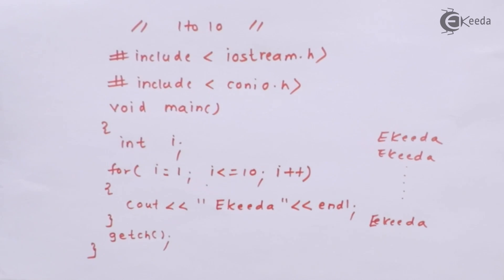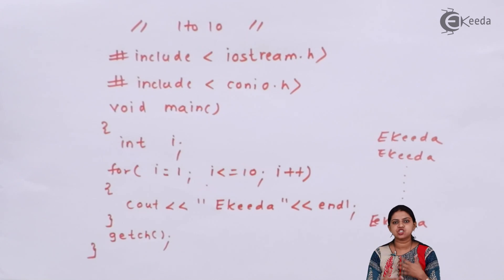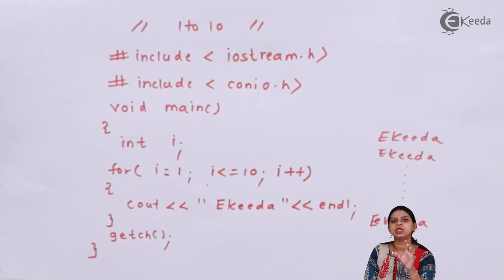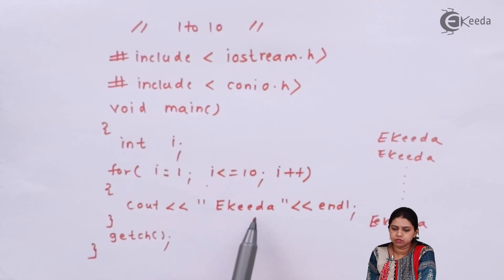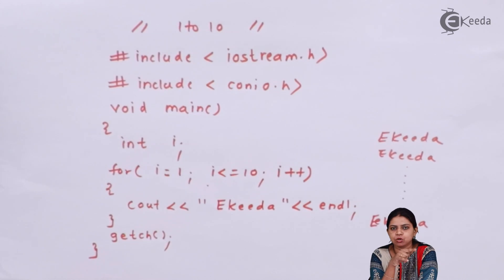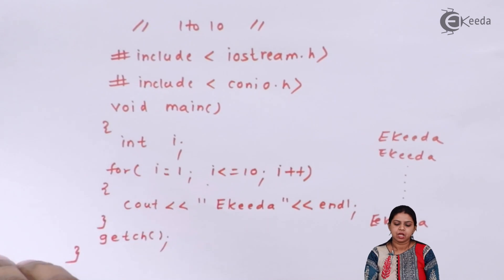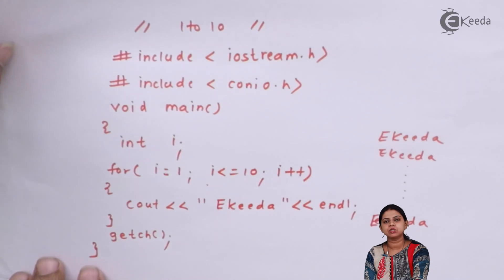This is how the for loop executes — at every iteration it checks the condition; if true, it executes the loop body; if not true, it exits the loop. So 'ikeda' gets printed 10 times on the screen. If instead you want to print 1 to 10 numbers, simply replace the string "ikeda" with the variable i outside of double quotes, and i's value will print 10 times.